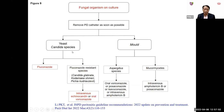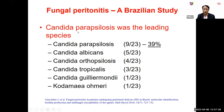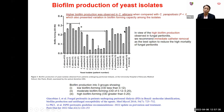For fungal peritonitis, susceptible yeast species are treated with fluconazole, while resistant organisms are treated with IV echinocandin plus oral voriconazole. Recent data since 2016 show Candida paracilosis is now the leading cause of yeast peritonitis (approximately 50% in an Italian study, 39% in a Brazilian study), followed by Candida albicans at approximately 21%. Biofilm production is higher in Candida albicans than Candida paracilosis. Given the very high biofilm production, immediate catheter removal is the best option to reduce the high mortality and morbidity of fungal peritonitis.